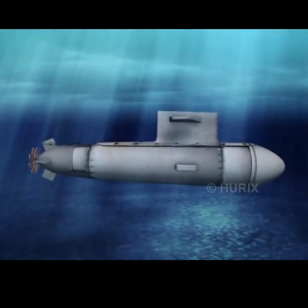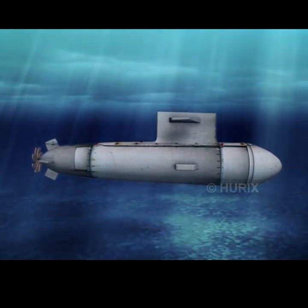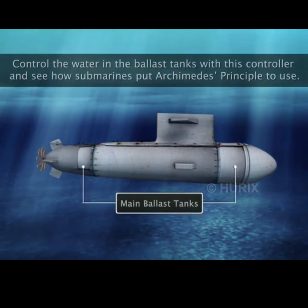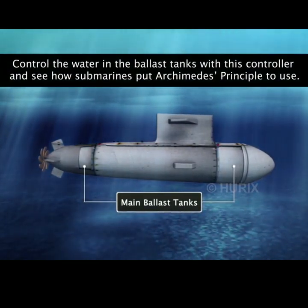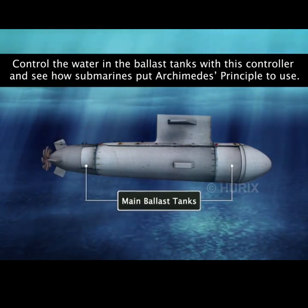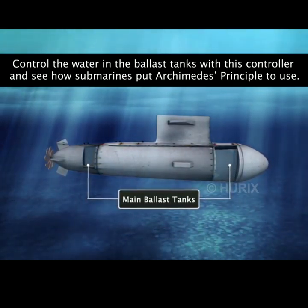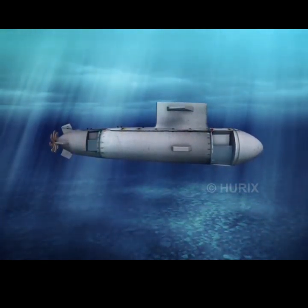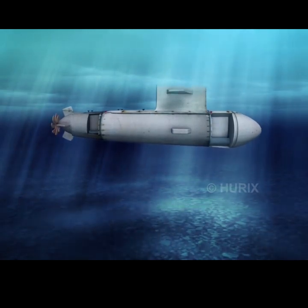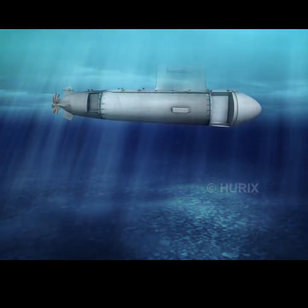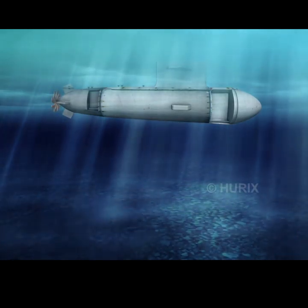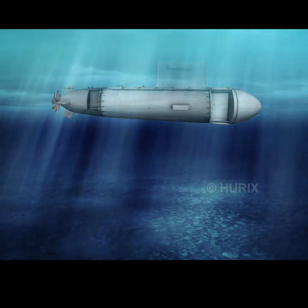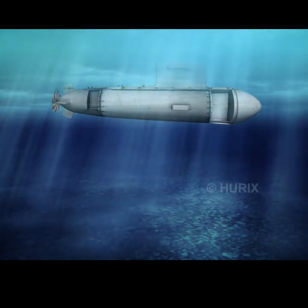Submarines use Archimedes' principle. Here is a model of a submarine. The hollow borders shown here are known as ballast tanks. The submarine regulates the ballast tanks to descend to the seabed or rise to the surface of the ocean. To come to the surface, the submarine releases compressed air into the ballast tanks. This pushes the water out and the submarine becomes lighter. The upthrust on the submarine becomes more than its weight, pushing the vessel upward to the surface.